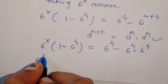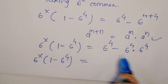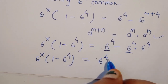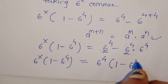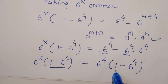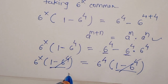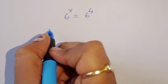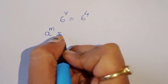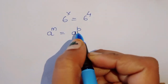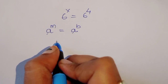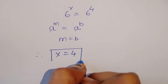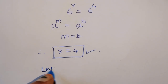So 6 raised to x times (1 minus 6 raised to 4) equals 6 raised to 4 common factor times (1 minus 6 raised to 4). We can see (1 minus 6 raised to 4) appears on both sides, so we cancel it. We are left with 6 raised to x equals 6 raised to 4. Since the bases are the same, the powers must be equal, so x equals 4.